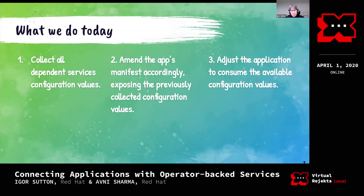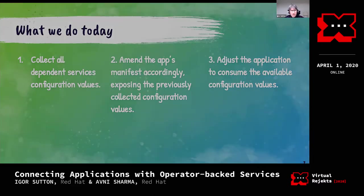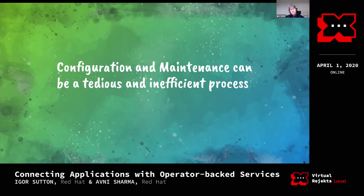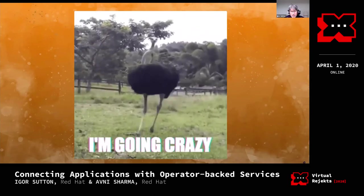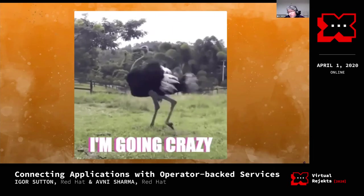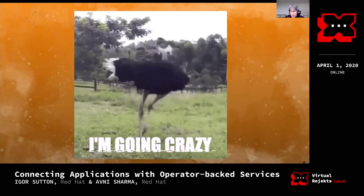The third part is actually the easiest - adjusting the application to consume the configuration value. For example, if you're aiming for an application to use a Postgres database, you need the JDBC URL to successfully connect. It's proven - with the success of Kubernetes desired state and all its mechanisms - that configuration maintenance can be a tedious and inefficient process. Doing that by hand is not something we would like to do, so people tend to create systems to automate this sort of thing.